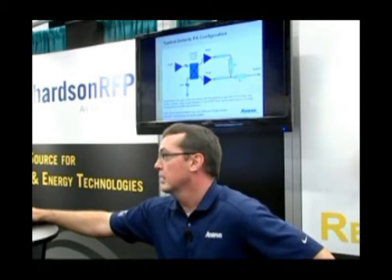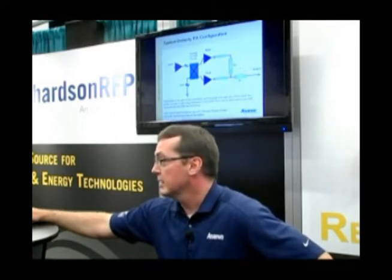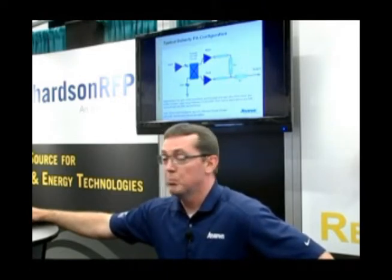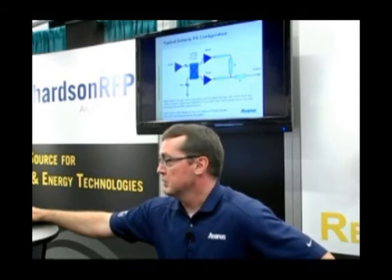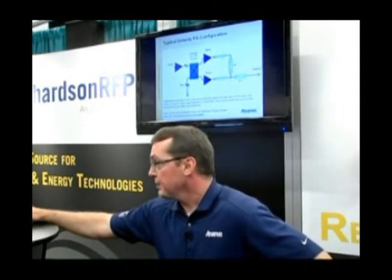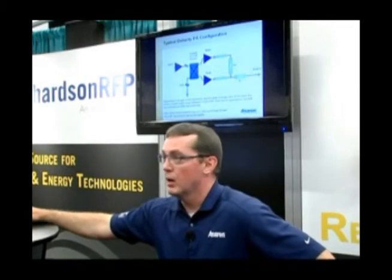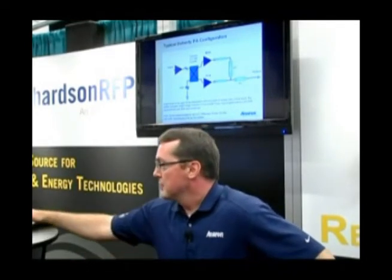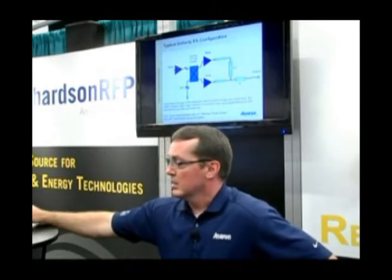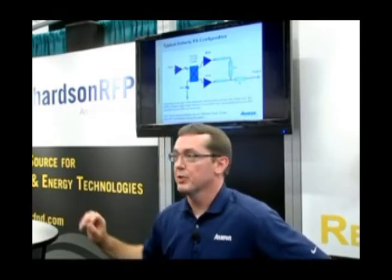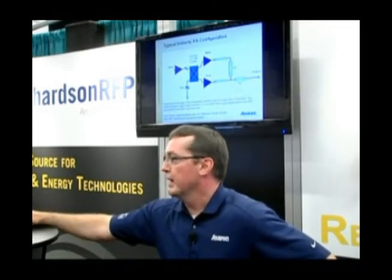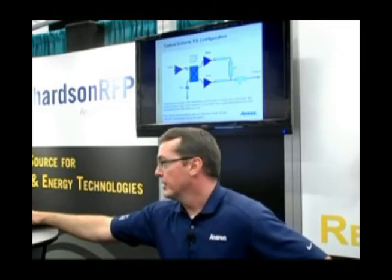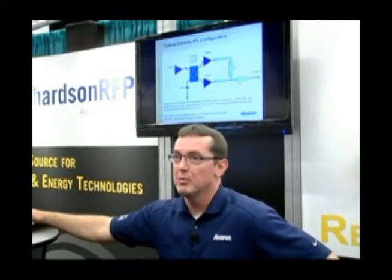For this system to work you have to use a Doherty combiner. The most basic implementation consists of a matching network where you match into a 50-ohm point, then use a 50-ohm transmission line that's a quarter wavelength long, and that connects again through a transformation to a 50-ohm output. Depending on the peak-to-average system, the digital pre-distortion, and crest factor reduction used, there are different split ratios — 3 dB, 2.5 dB, 5 dB, and different ratios.